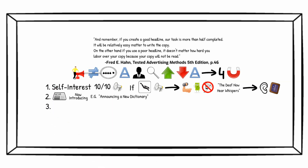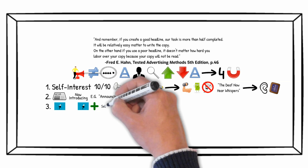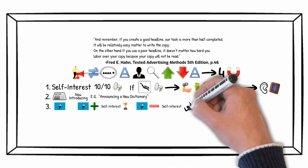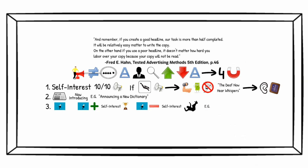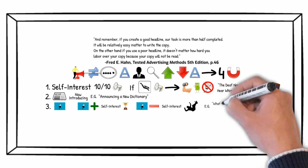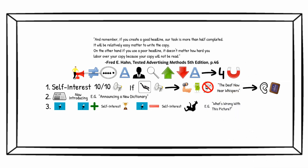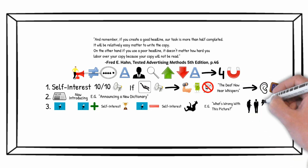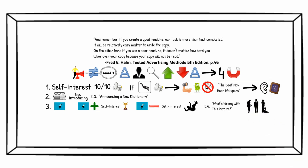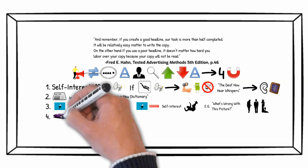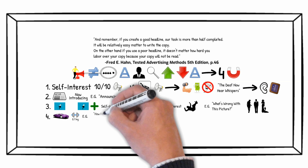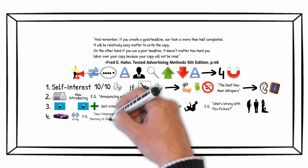Then comes curiosity. Curiosity is a great addition to self-interest, but alone may often fail miserably. For example, the headline 'What's wrong with this picture,' which is accompanied by an illustration of a man walking in between two women. The last one is the quick and easy appeal. For example, 'How I improved my memory in one evening.'